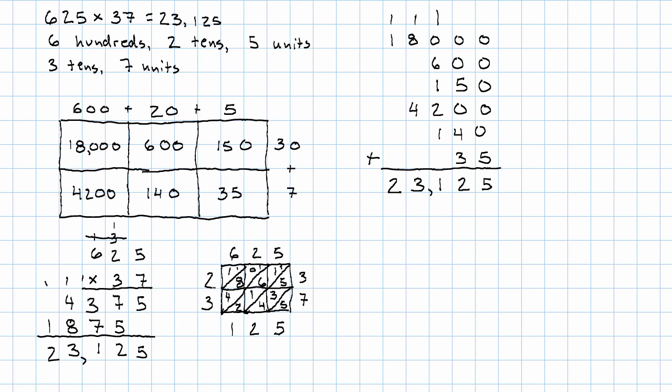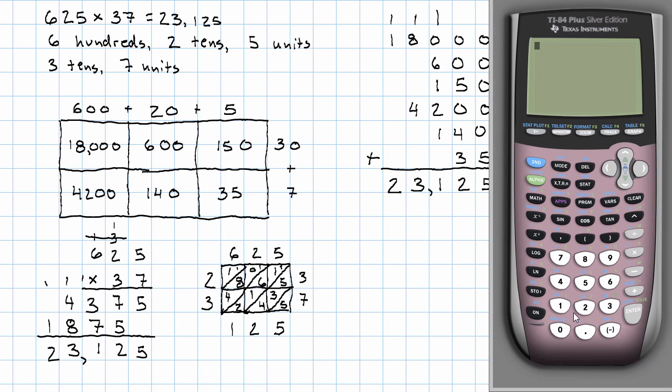And of course the third method that we can use to multiply these numbers is to just use a calculator. So 625 times 37, enter. Of course we get the same answer, 23,125. Which method should you use? Whichever method you prefer, or for multiplying large numbers use whichever method you're most comfortable with.